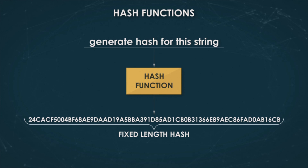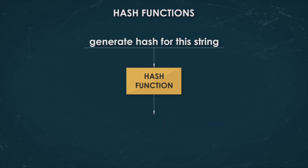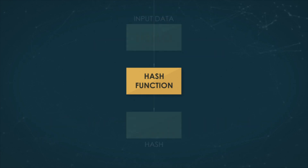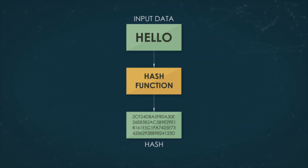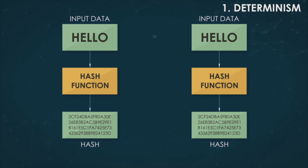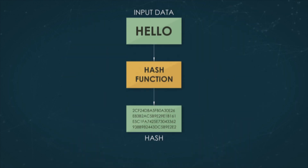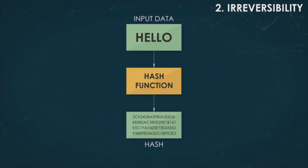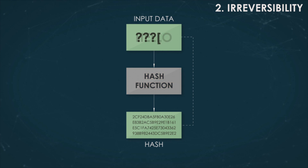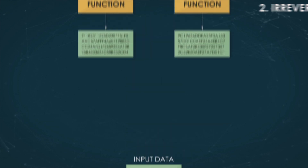We will be talking about cryptographic hash functions, which are hash functions with the following qualities. First, determinism: they always return the same hash for the same input message. Second, irreversibility: that is, the impossibility to calculate the source message using only the hash.